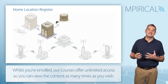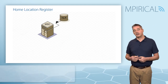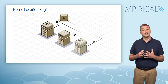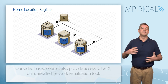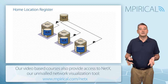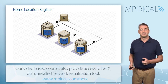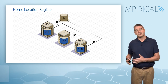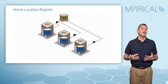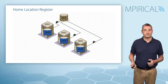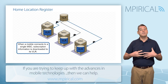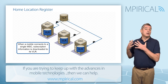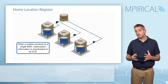In reality a network will not be comprised of a single MSC. There will be a number of MSCs distributed across the network, each historically providing a region of geographical management. Inside each of these MSCs there is a database termed the VLR, or Visitor Location Register.